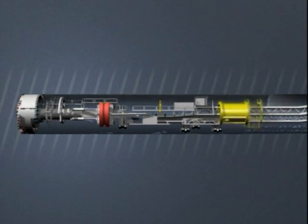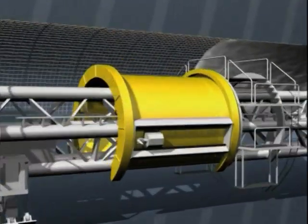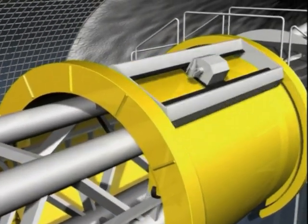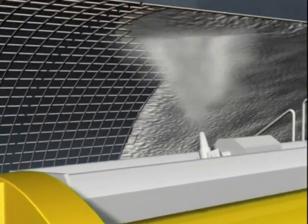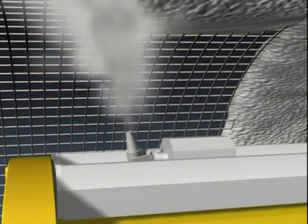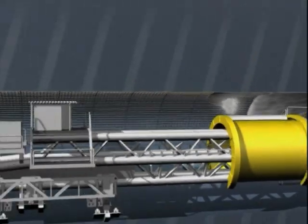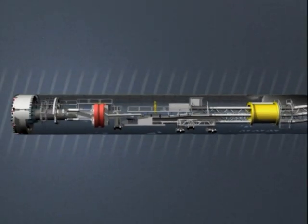The shotcrete robot now finally secures the finished tunnel walls. From the boring head to here is a distance of 60 meters. The backup train consists of all the installations and materials needed to supply the boring machine and remove the excavated rock.